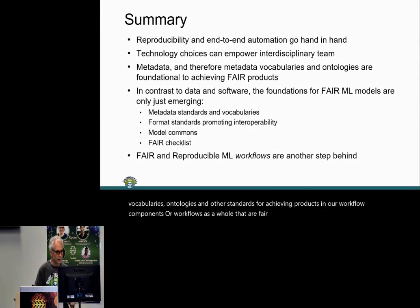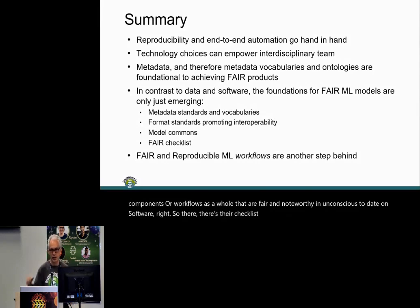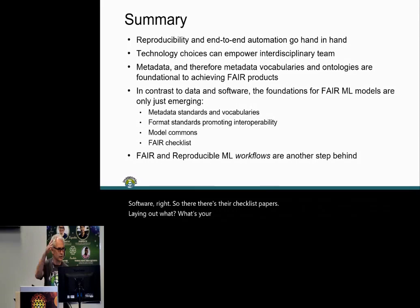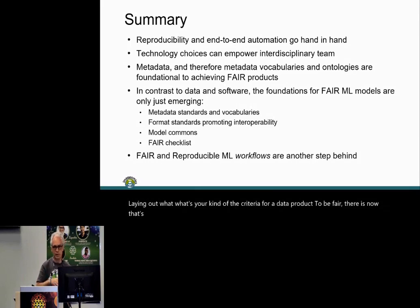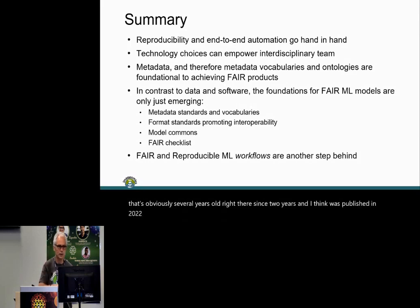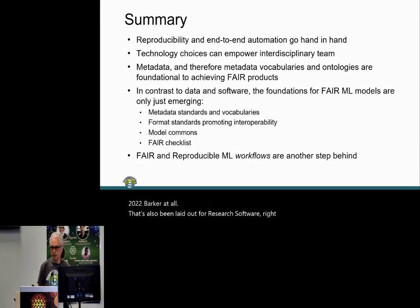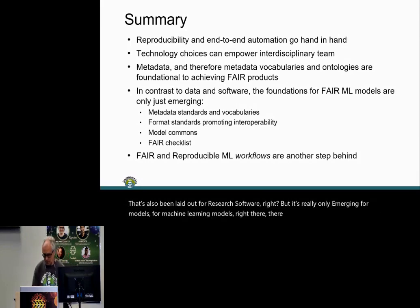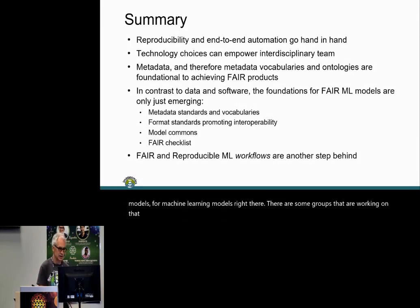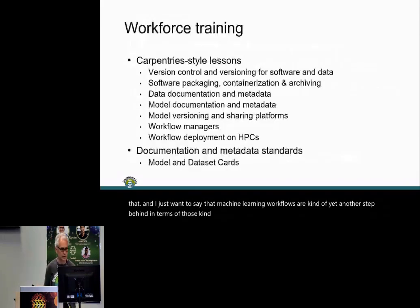In contrast to data and software, there are checklist papers laying out criteria for a data product to be FAIR. For research software, that has been laid out since around 2022 by Barker et al. But it's really only emerging for machine learning models — some groups are working on that. Machine learning workflows are yet another step behind in terms of this kind of formalization of checklists.